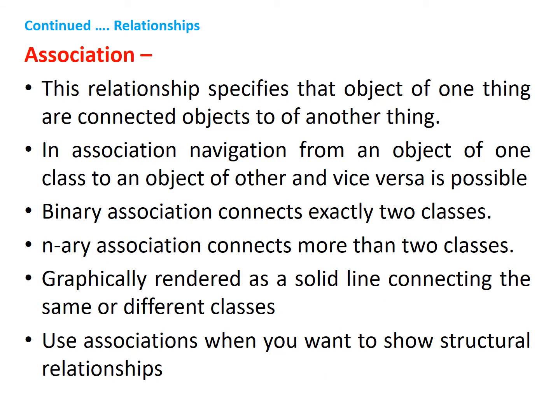An association is a structural relationship that specifies that objects of one thing are connected to objects of another thing. Given an association connecting two classes, you can navigate from an object of one class to an object of another class and vice versa. An association that connects exactly two classes is called a binary association. An association that connects more than two classes is called an N-ary association. Graphically, an association is rendered as a solid line connecting the same or different classes. Use associations when you want to show structural relationships.